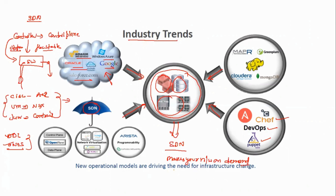The security team configures all flows in their firewalls, then the load balancer team configures external and internal VIPs, then the application team installs all applications on the server, and finally testing is done. All these processes take around 90 to 100 days to commission a particular application.